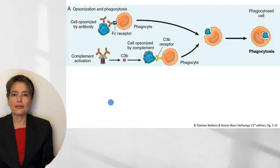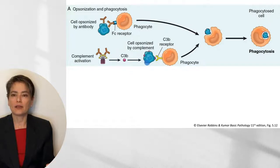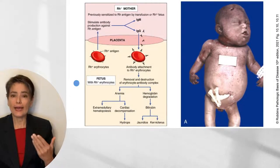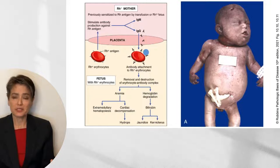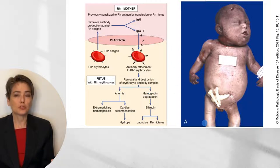Let's look at each mechanism. For opsonization and phagocytosis, a cell opsonized by antibody is recognized by a phagocyte and consumed, or complement-activated C3b opsonizes a cell for phagocytosis. An example of this is immune fetal hydrops: a fetus with Rh-positive blood cells and an Rh-negative mother — in the first pregnancy she develops IgM antibodies; by the second or subsequent pregnancies she develops IgG antibodies that cross the placenta and bind to the fetus's Rh-positive erythrocytes, causing removal and destruction of those erythrocytes, leading to hydrops, jaundice, and kernicterus.